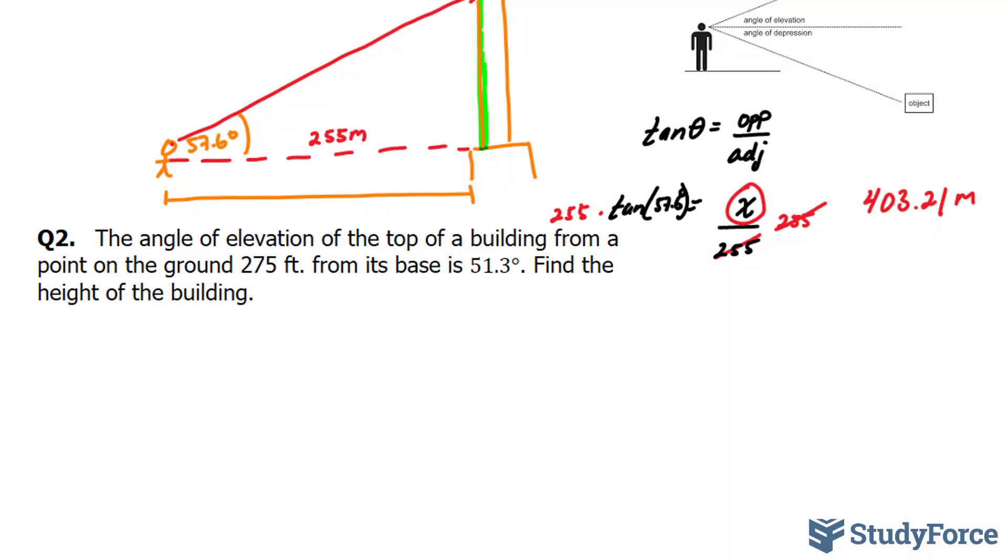So this is a very similar problem to the one that we just did. This time we have a right triangle where this angle is 51.3 degrees. And from the observer to the base of the building, it is 275 feet.